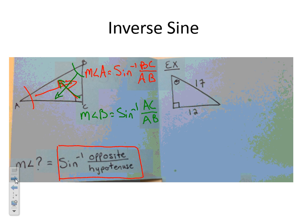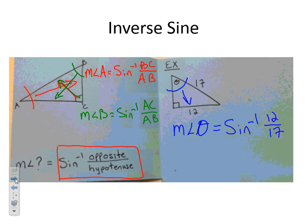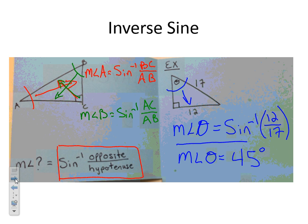Now for our example, I have to find the measure of angle theta. I'm going to set that equal to the inverse sine of the opposite, which is 12, over the hypotenuse, which is 17. I'll type inverse sine of 12 over 17 into my calculator and get about 44.9. Rounding to the nearest whole degree, the measure of angle theta is 45 degrees.